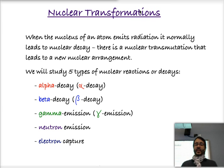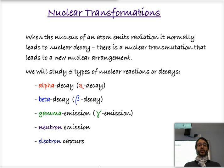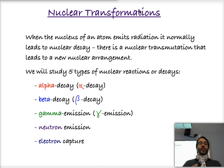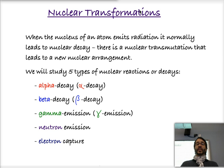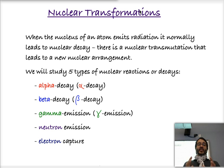Welcome to our video on nuclear transformations. Today we're going to talk about what happens when the nucleus of an atom emits radiation. This nuclear radiation normally causes what is called a nuclear transmutation — that is, the changing of the structure of the nucleus. So it either becomes a different isotope or it becomes a different element altogether. When there is radioactivity being emitted from the nucleus of an atom, normally that radioactivity is in the form of particles. Those particles are actually taking chunks, parts of the nucleus and emitting them, throwing them out. So therefore the remaining nucleus is going to be different, and that's what gives us this transformation of the nucleus — or the fancy word, transmutation.